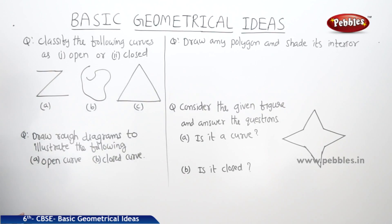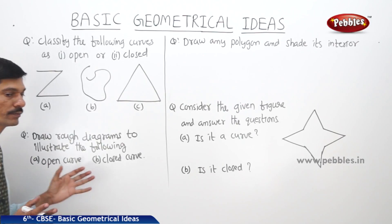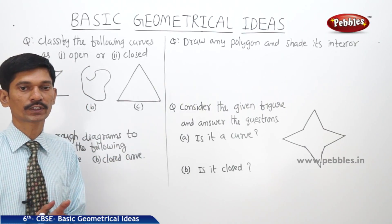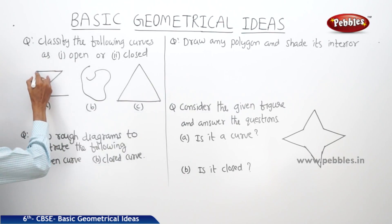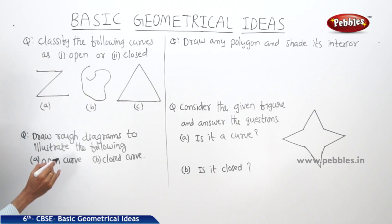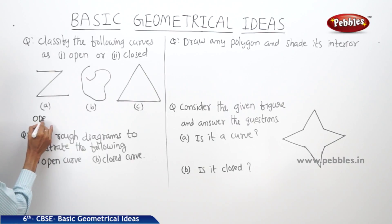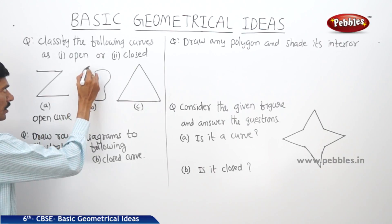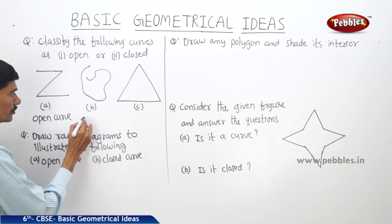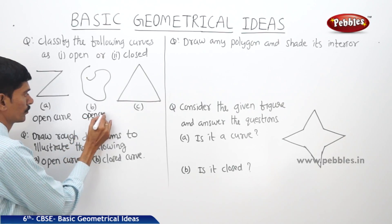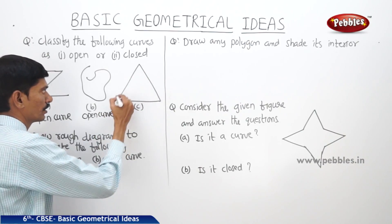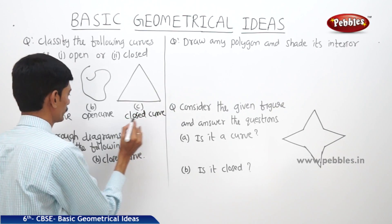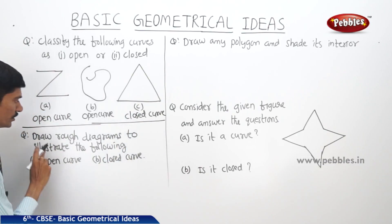The first problem is: classify the following curves as open or closed. When the end points of a curve are not joined together, it is an open curve. When the two end points of a curve are joined together, it is a closed curve. So here, the two end points of this curve are not joined together, so this is an open curve. The next one also has end points that are not joined, so it is also an open curve. For the next one, all the end points are joined, so it is a closed curve.